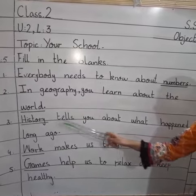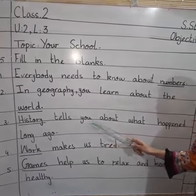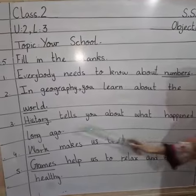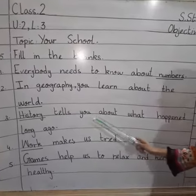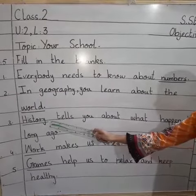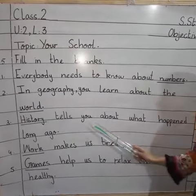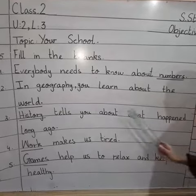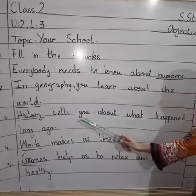Number 3: dash tells you about what happened long ago. Answer is history. History hume batati hai ke bhoot saal pehle kya hua tha.